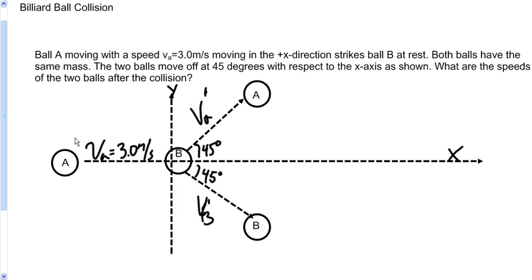The problem reads, ball A is moving with a speed of 3 meters per second, moving in the positive x direction, and it strikes ball B at rest. Both balls are assumed to have the same mass, we'll label that mass M.